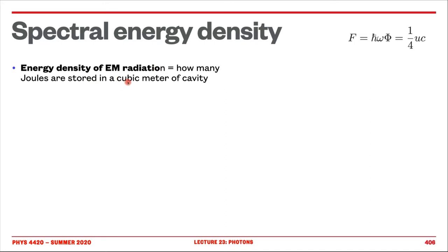We talk about the energy density of electromagnetic radiation — how many joules are stored in a cubic meter of cavity. But what we would really be interested in is a spectral energy density. Spectral usually means frequency dependent — so how much energy is stored at different frequencies. To understand this, we use a thought experiment.